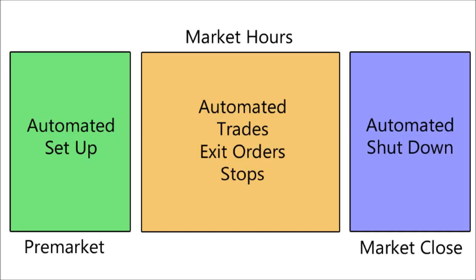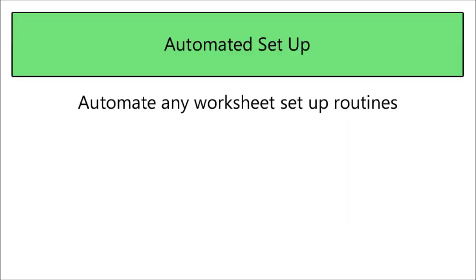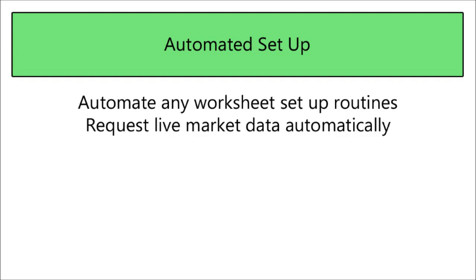If we look at a typical trading day, we can break our time into three blocks: a pre-market time where we do our setup, market hours when the market is open and we'll be sending trades and exit orders or stops, and then a shutdown process when the market is closing and we need to automatically exit trades or shut down the system.